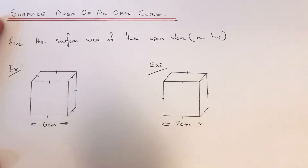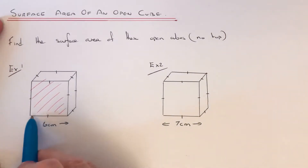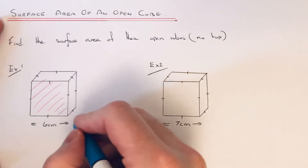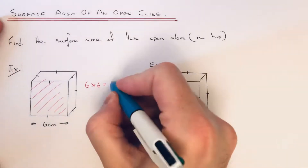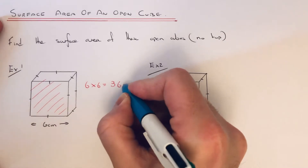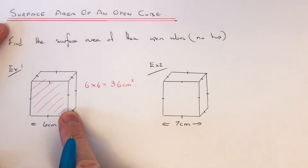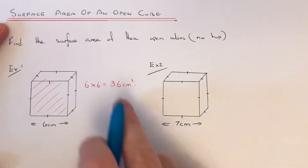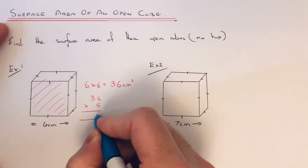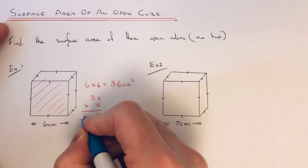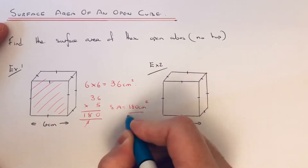All we need to do is work out the area of one face. It has two edges of 6 and 6. To find the area you multiply these together — length times width. So 6 times 6 is 36cm squared. That is the area of this face, and we have 5 identical faces, so we times this answer by 5. So our total surface area of the box is 180cm squared.